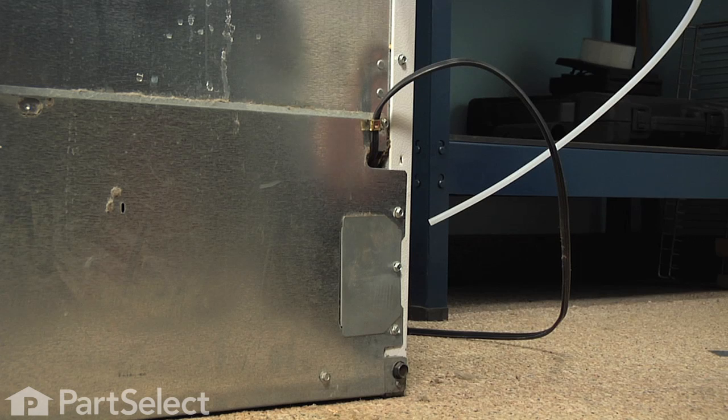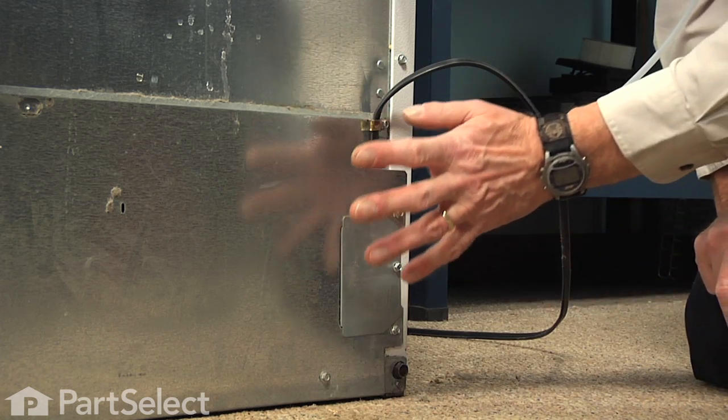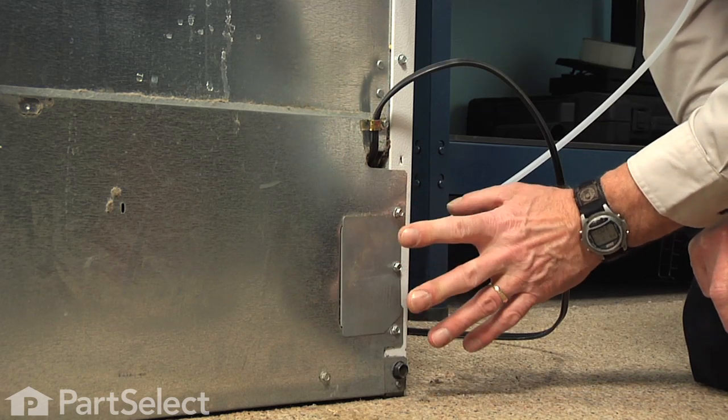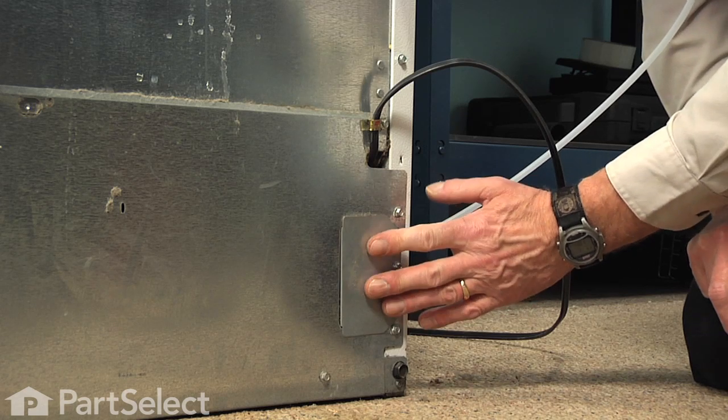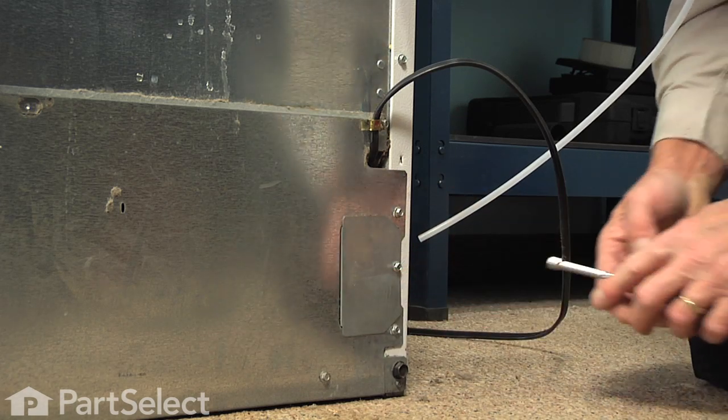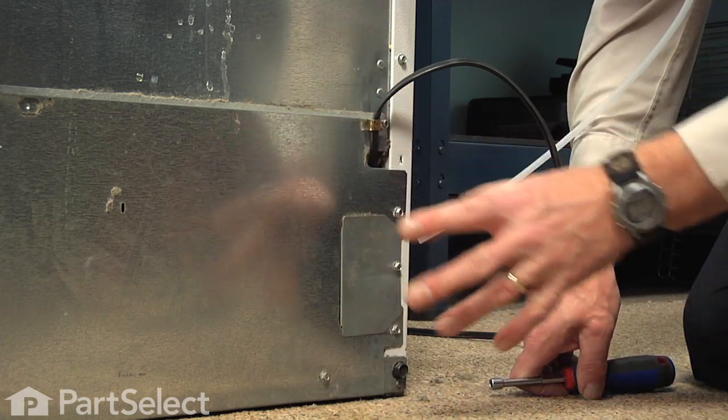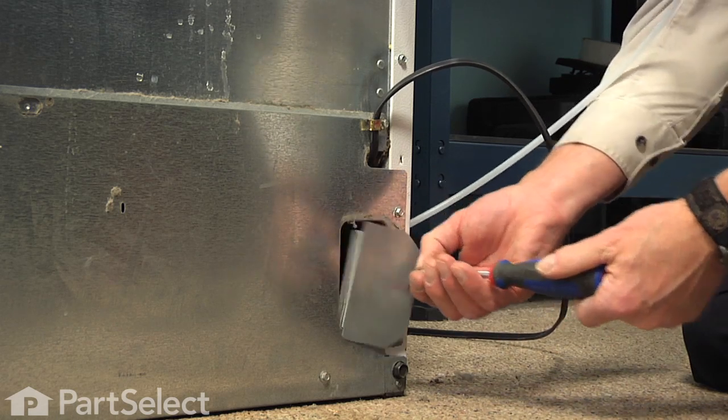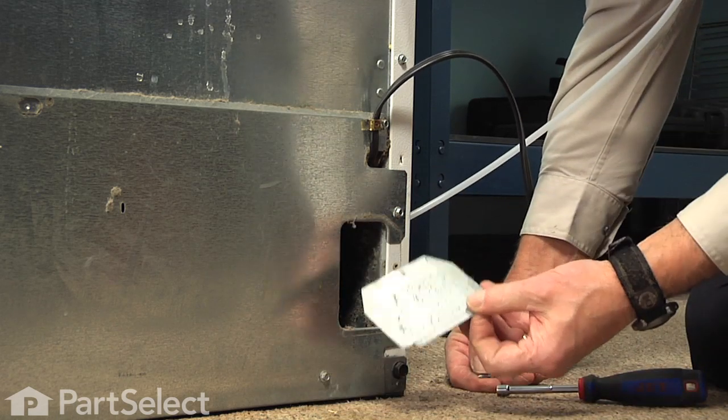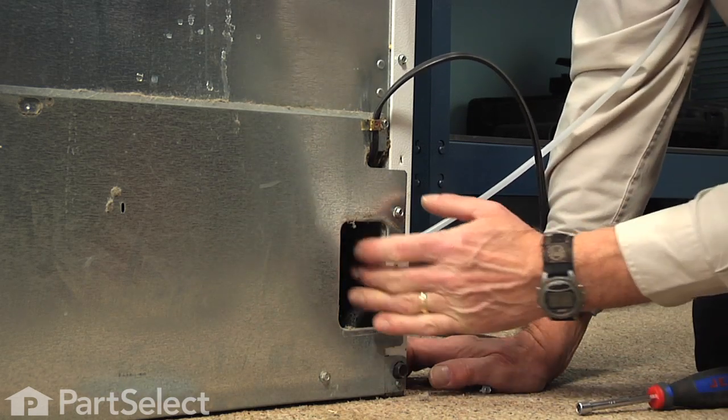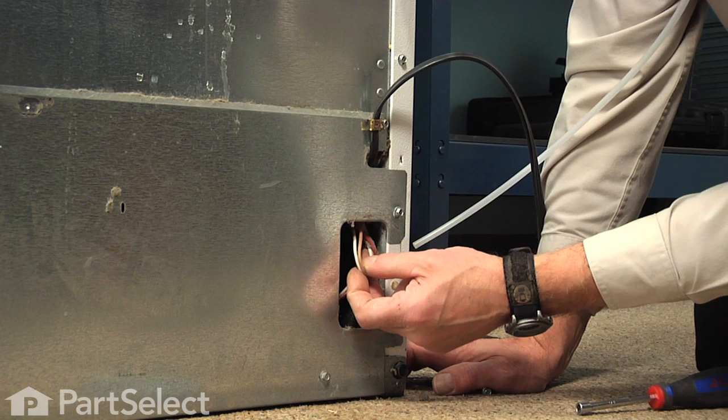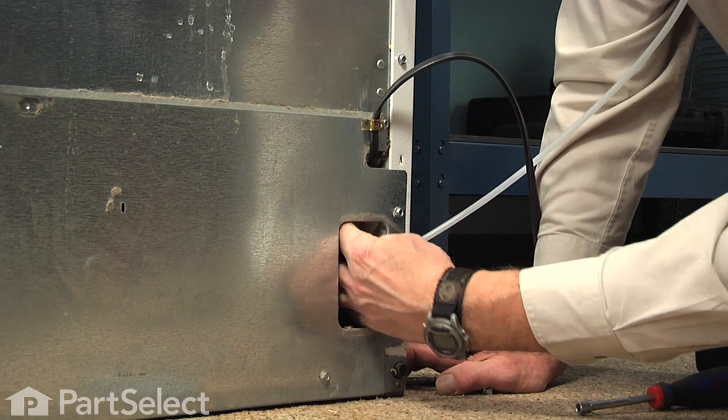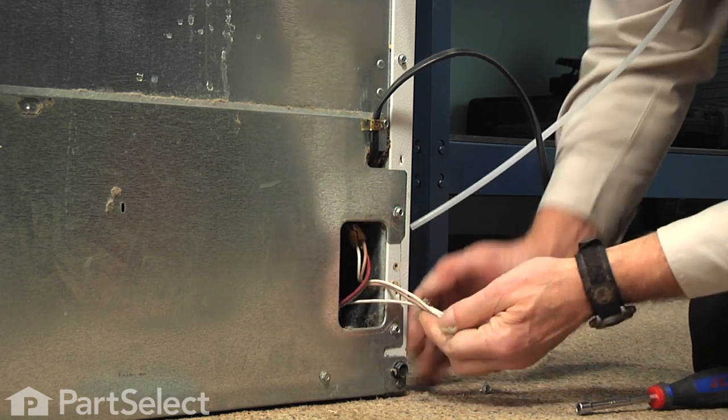Now if you follow the instruction manual, you will note that it states if your model has a metal back panel on it and this small access panel on the right hand side, that that's all we need to remove is this one screw that holds that access cover in and then discard the cover. If yours is the cardboard back, we'll need to remove all seven screws that hold that cardboard back in place. On this one we can discard that cover and then we're going to reach in here, find the tan and white wires that go to the connector for the ice maker fill valve, locate that and pull it out.